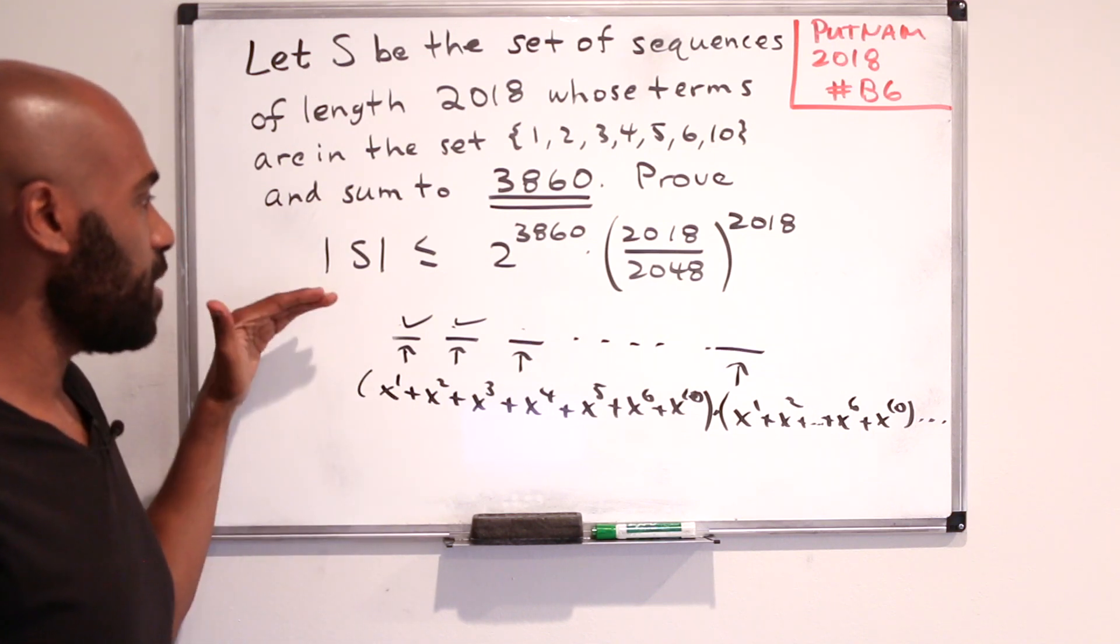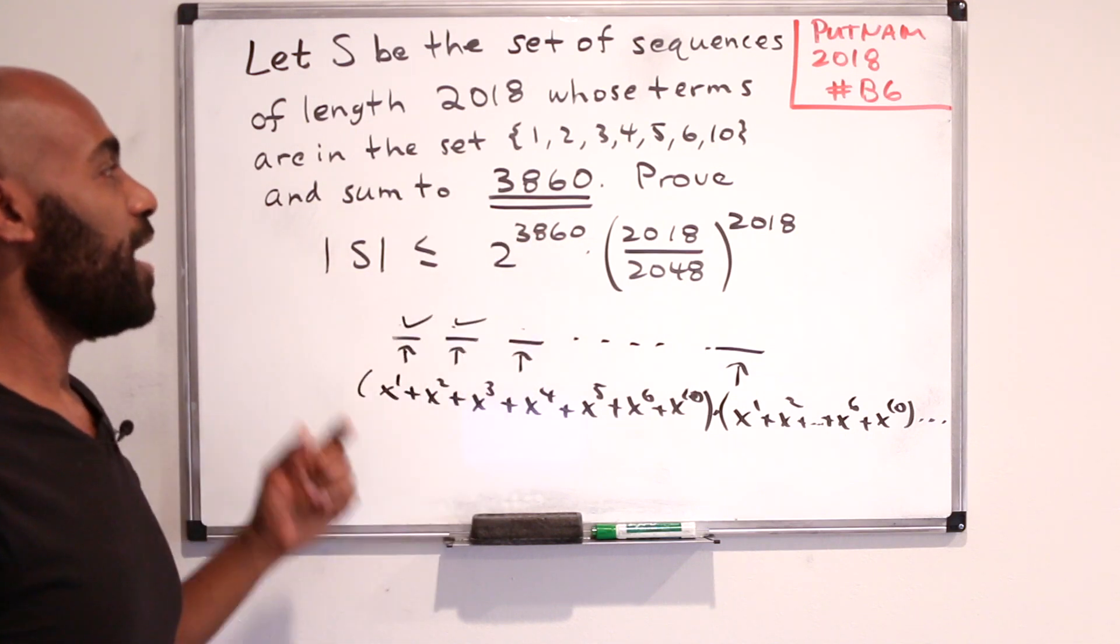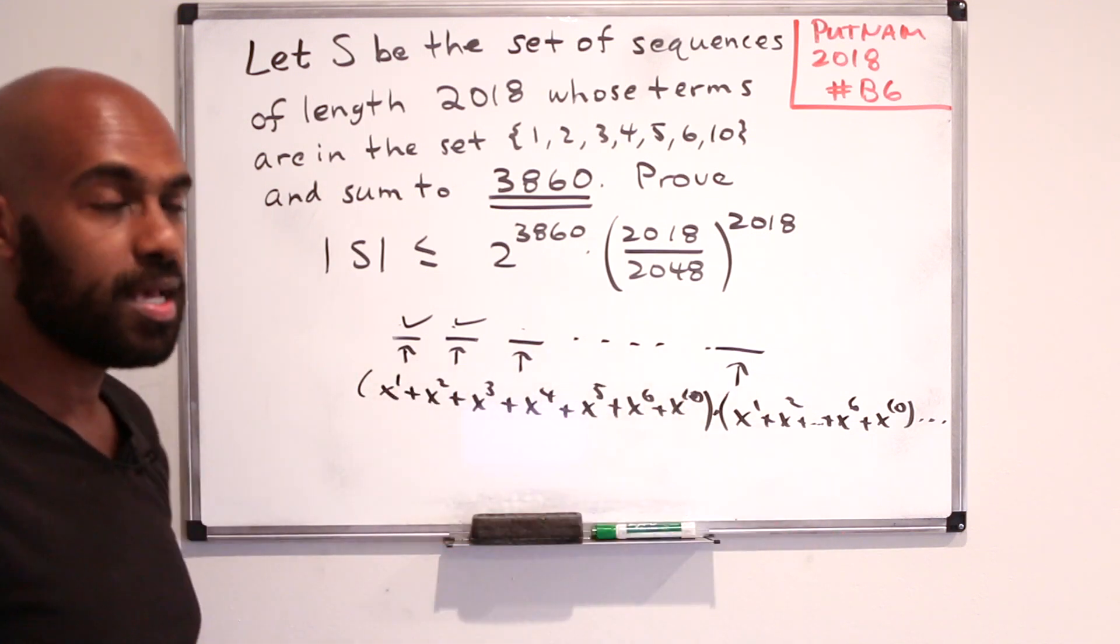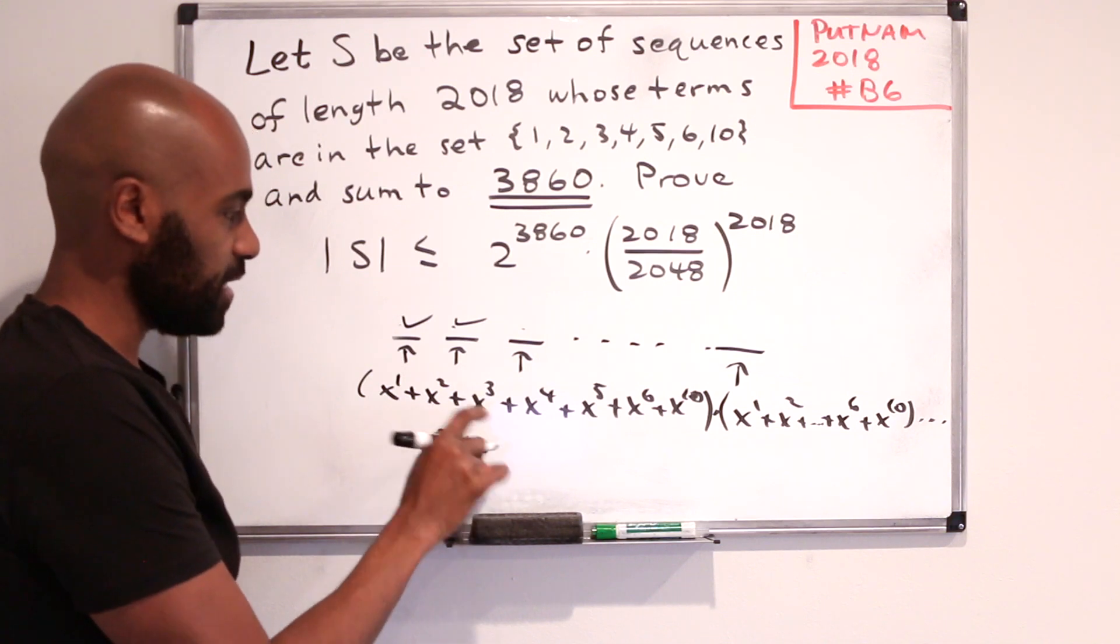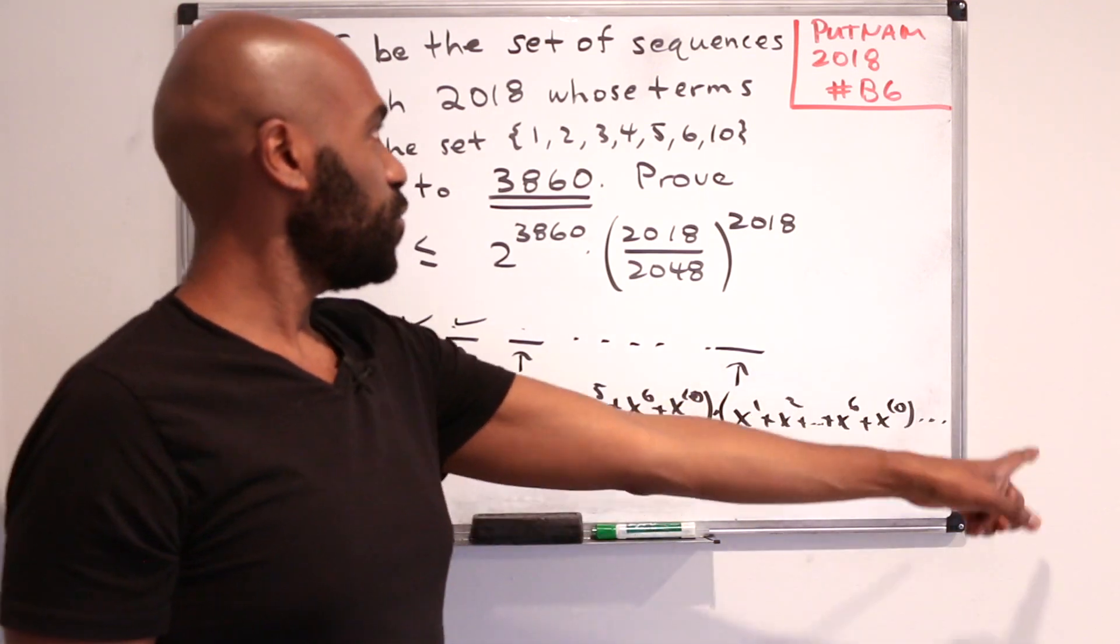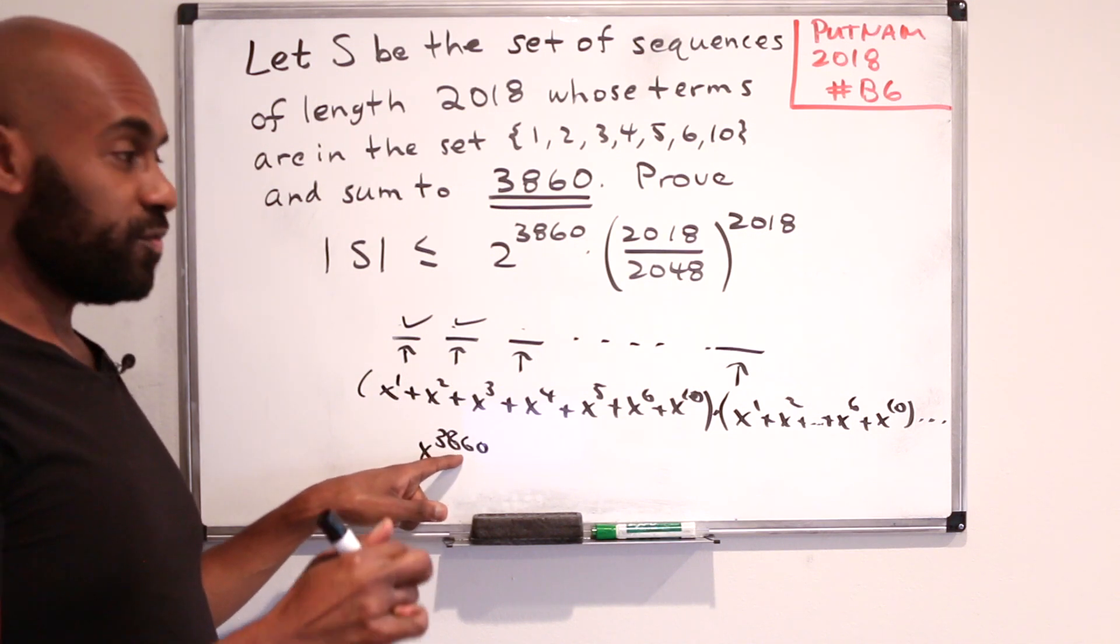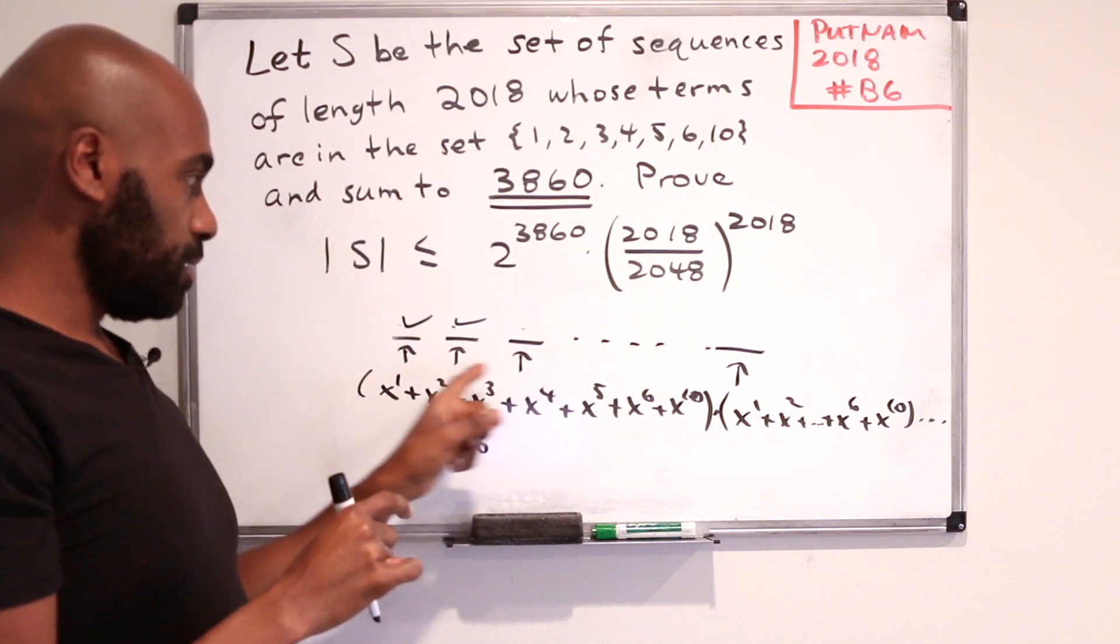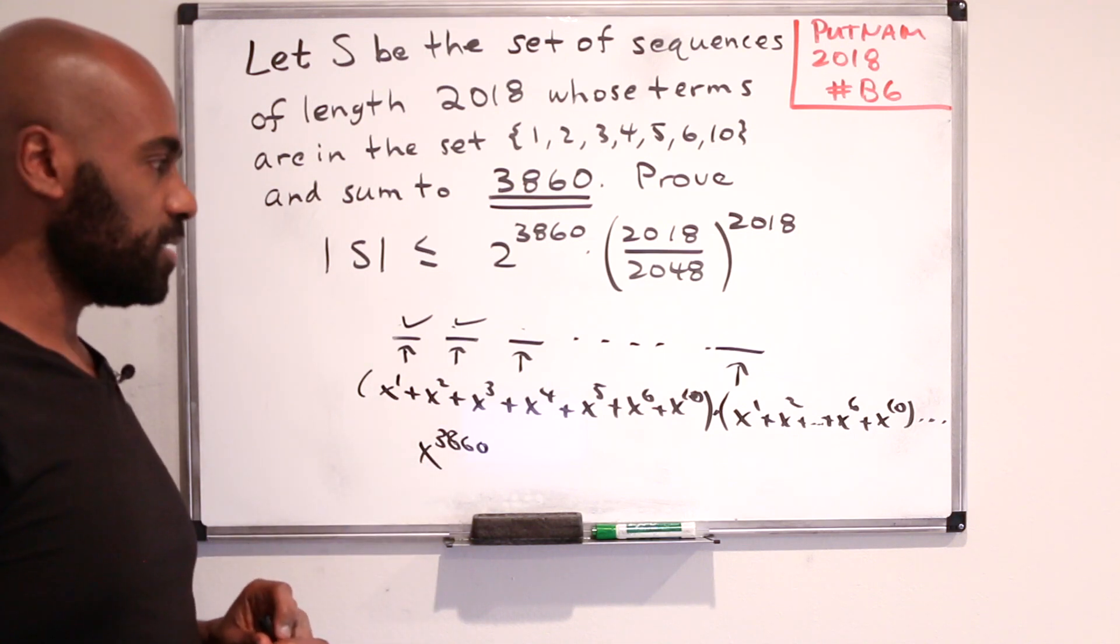So as a consequence, if you're interested in the number of sequences that sum to 3860, that's going to be the x to the 3860 coefficient of this entire product. Because any time you see a x to the 3860 in this expansion, what you've done is selected 2018 monomials whose exponents sum to this. And that means you've selected 2018 numbers from this set, because that's what these numbers here are, that sum to 3860.